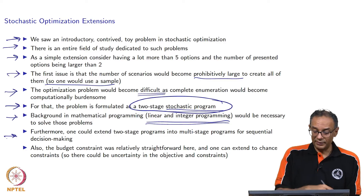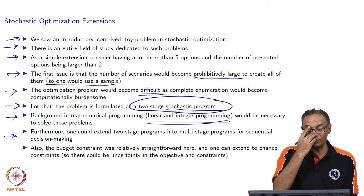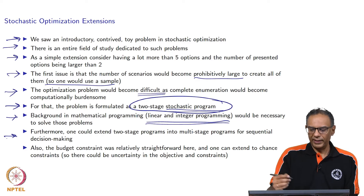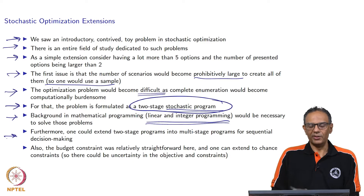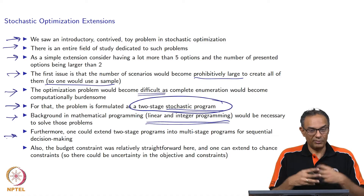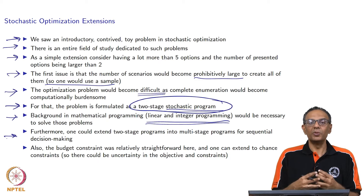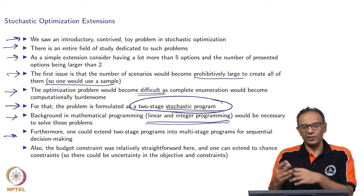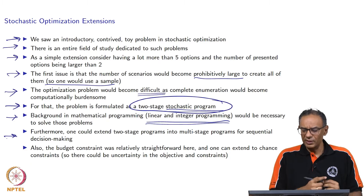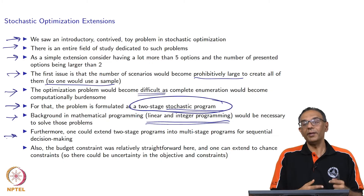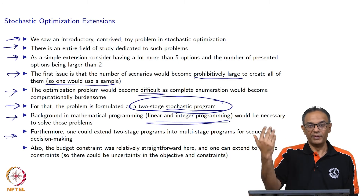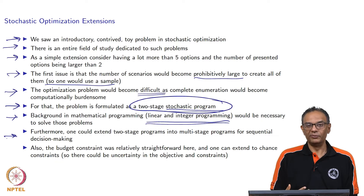You could also think about having multiple stages of decisions — you do not have to have just one stage. We did some research along with some students on what is called the energy procurement problem. Let us say you are a utility company that buys energy, especially from solar and wind. Solar energy is getting extremely popular. You want to combine solar and wind energy along with your regular fossil fuel or nuclear based energy to provide day-to-day consumption. There is a lot of uncertainty in solar and wind because we do not know how much wind will blow or how much light we will have. If there is cloud cover, the amount of solar power generated could be reduced.